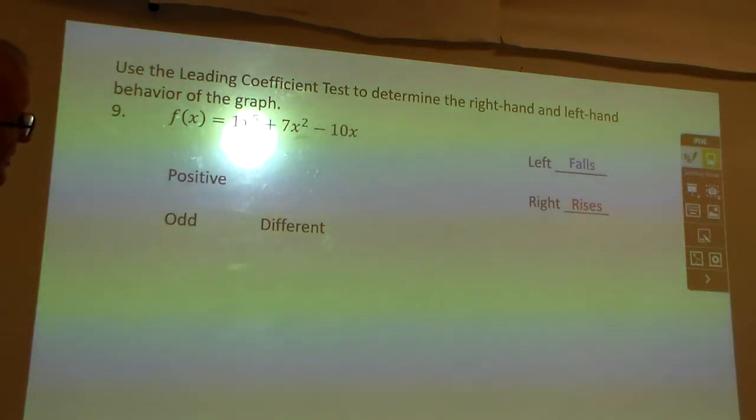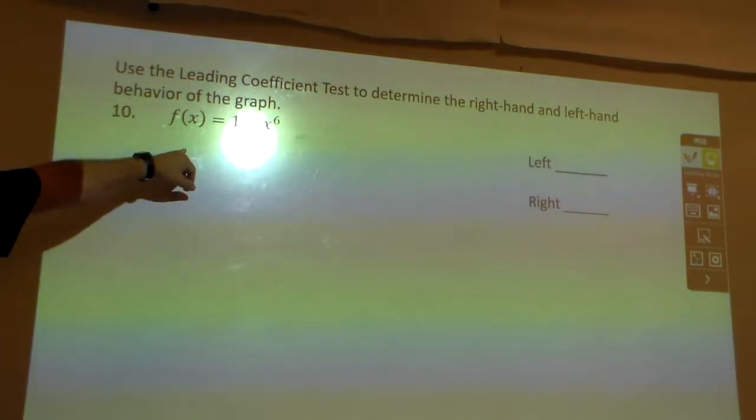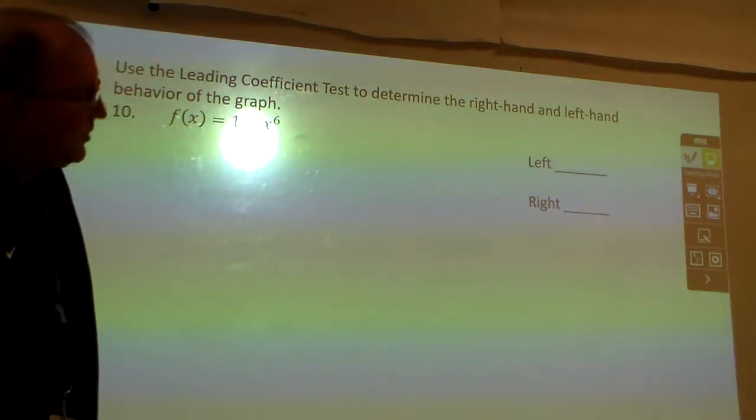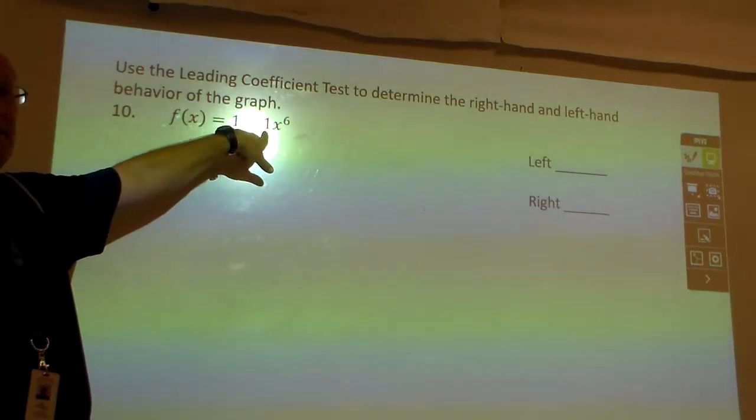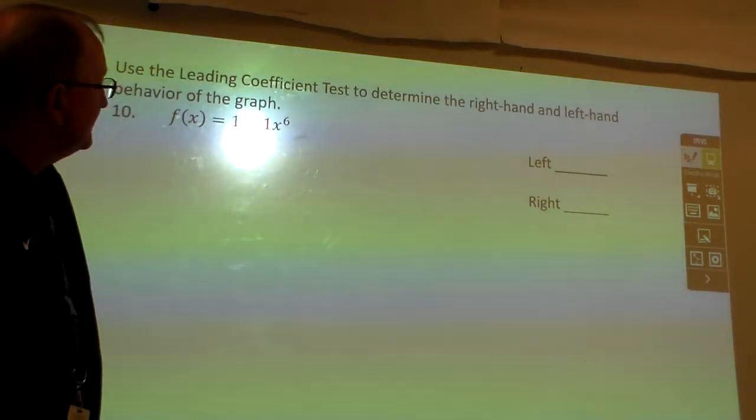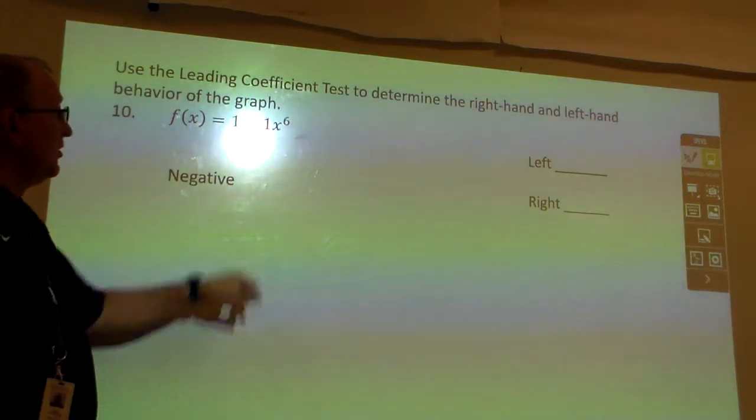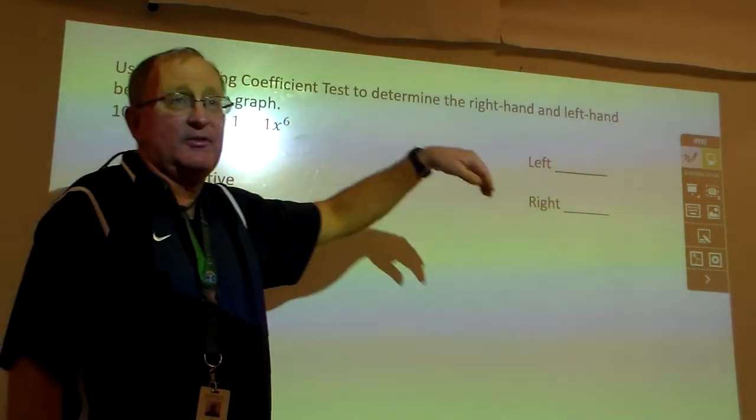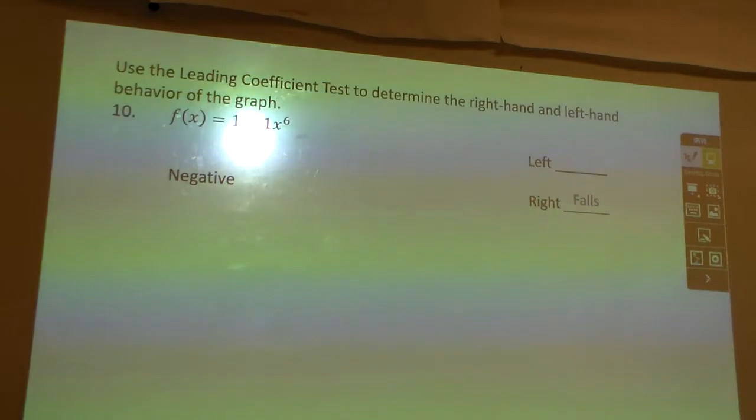And then the last one. Notice, it doesn't have to be the first number. My leading coefficient is this number back here. So what would be the number in front of it? It's not positive one, but negative. So this time, if it's negative, think about it. If all these x's are positive, multiply by that one negative, it's going to make all the right side fall. So if that first number is negative, it falls. If it's positive, it rises.